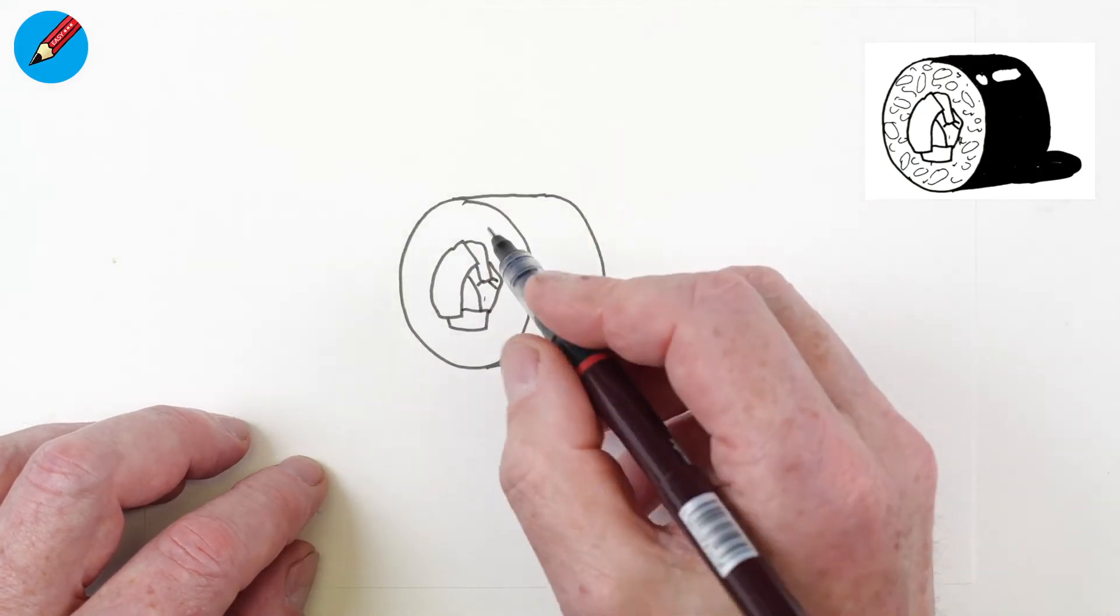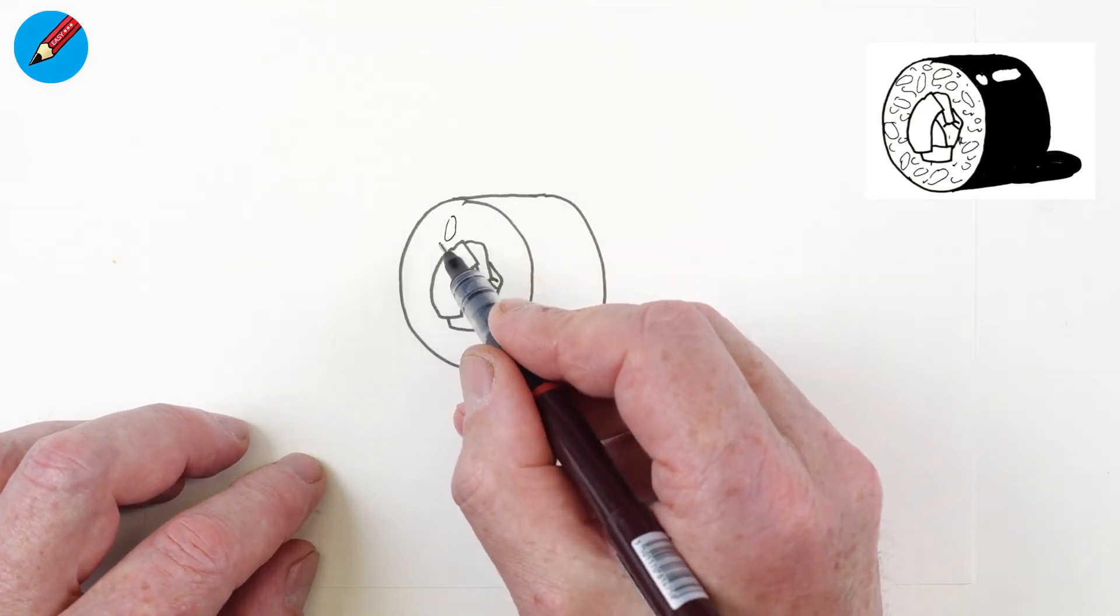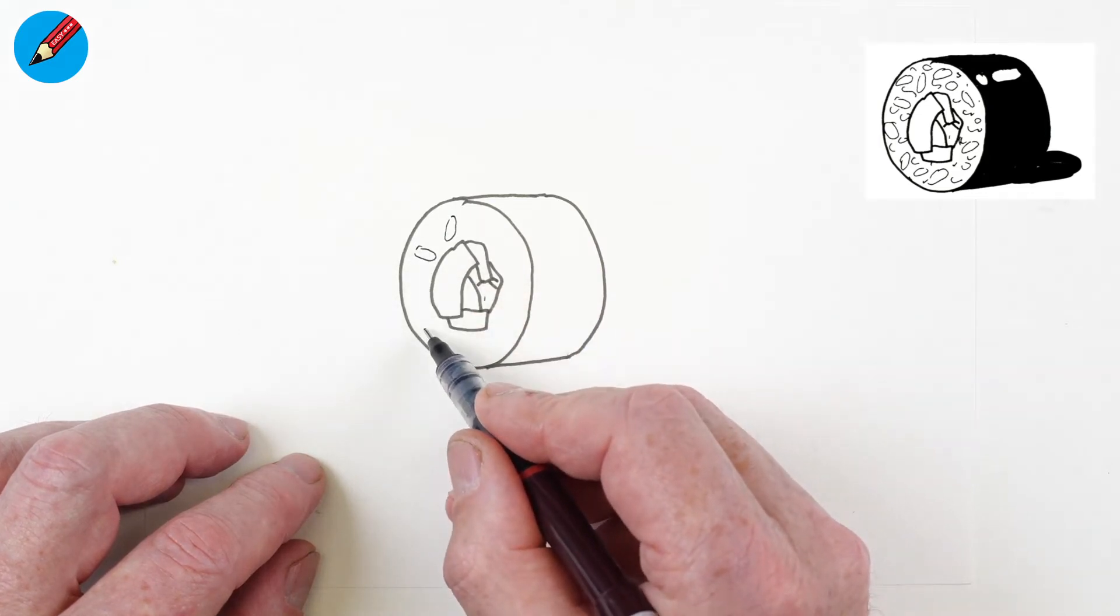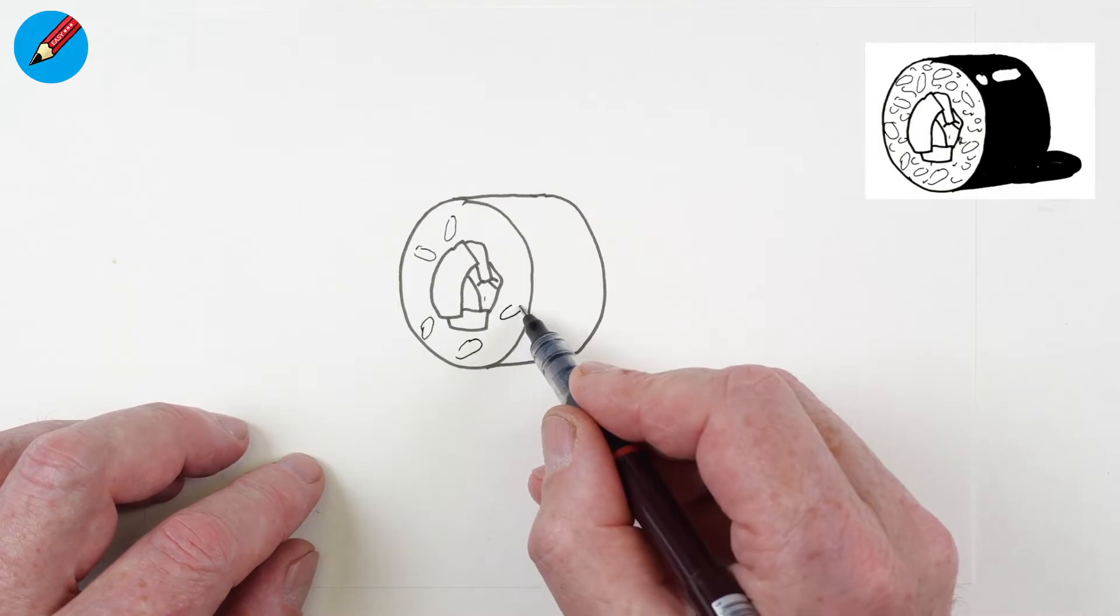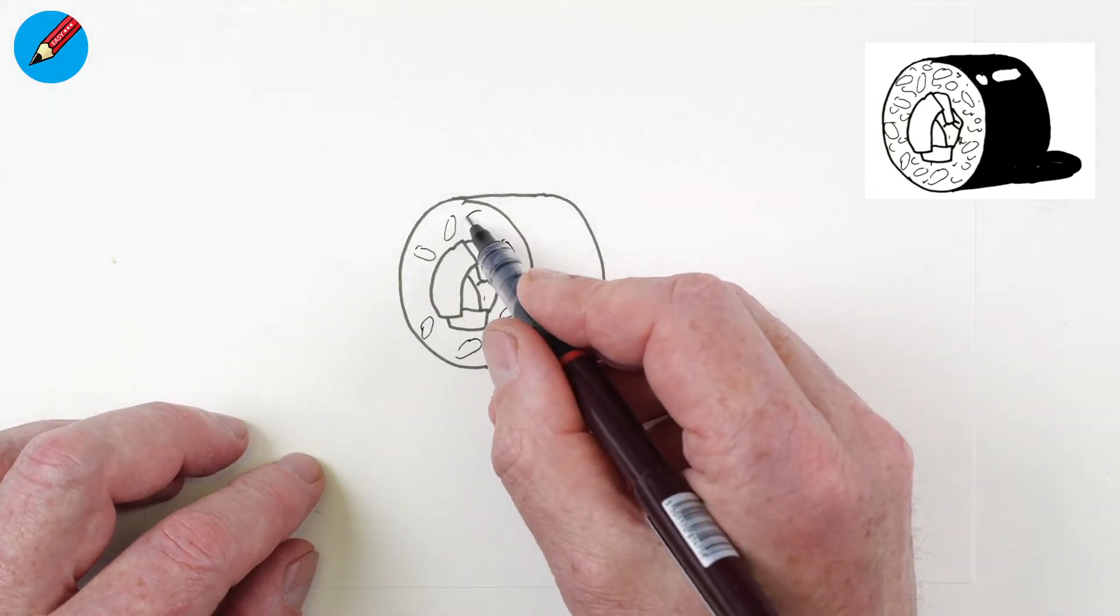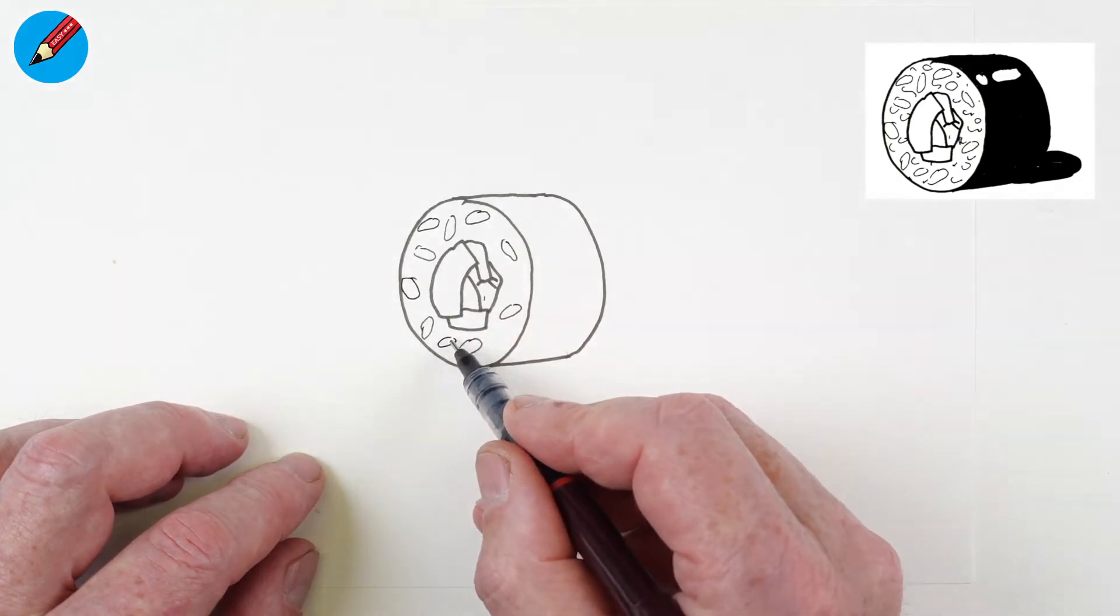And then you want to press very lightly and try and get the line of the ink not quite so thick. So if you press very lightly like that, we can draw these grains of rice at random angles.